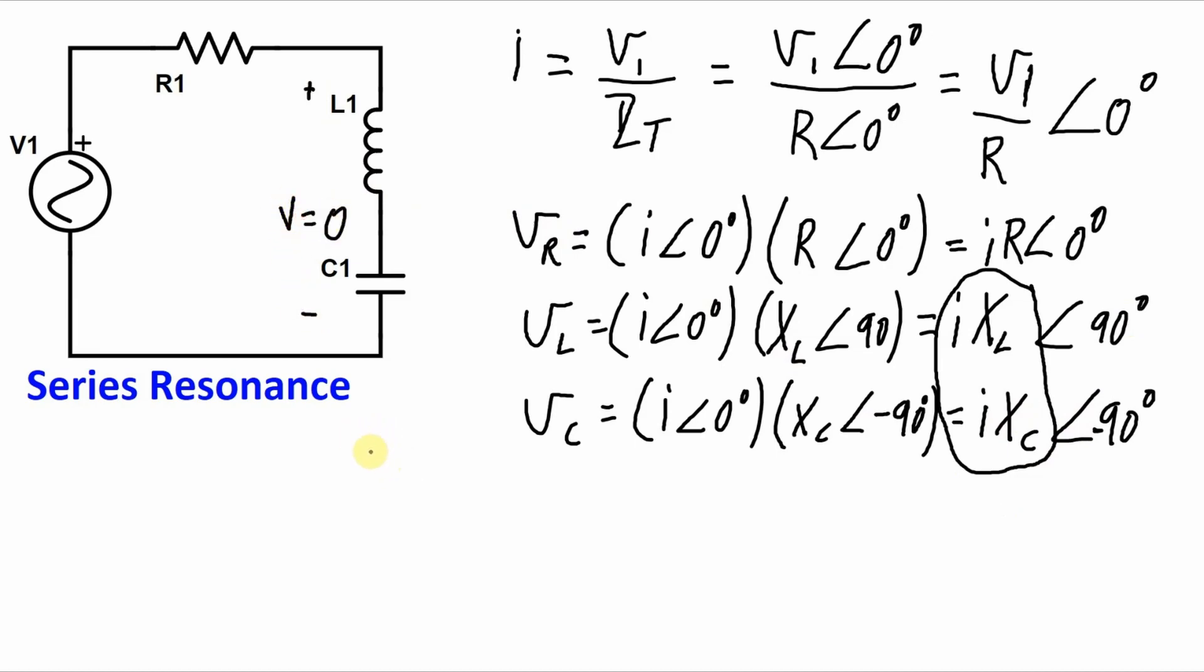And in phasor form, that would look something like this. We'll have voltage from the resistor on the real axis. We'll have the voltage from the inductor on the positive imaginary axis. And we'll have the voltage of the capacitor also on the imaginary axis, but going in the opposite direction. And since those two numbers are equal to each other, the vector sum of this phasor and this phasor will be equal to zero.